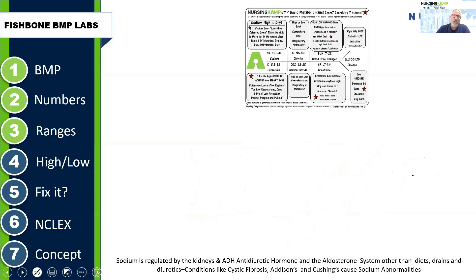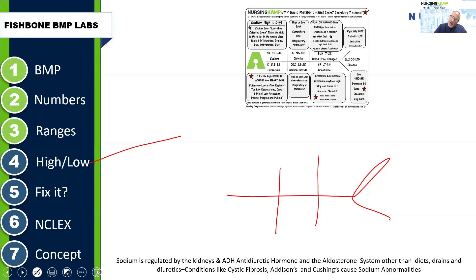Now let's talk about highs and lows. Most important is knowing which is acute and which is chronic. For sodium: high is chronic, low is acute. Calcium: both high and low are significant. Chloride and CO2: both high and low are chronic — meaning assessment. BUN: high is acute, low is chronic. Creatinine: high is acute, low is chronic. Glucose: low is acute, high can be chronic.